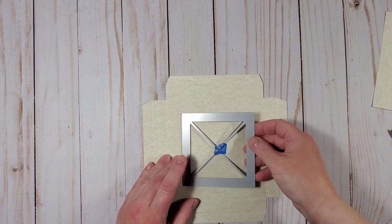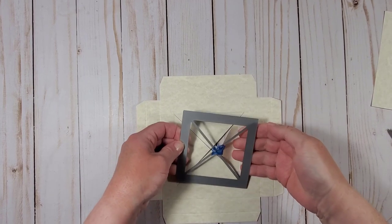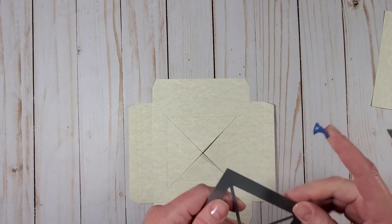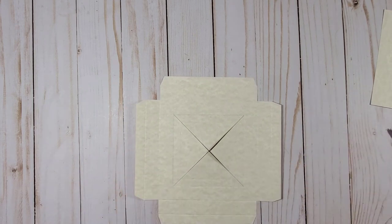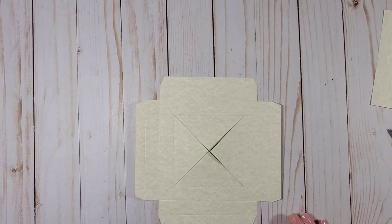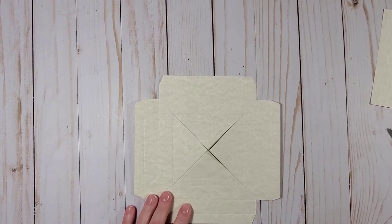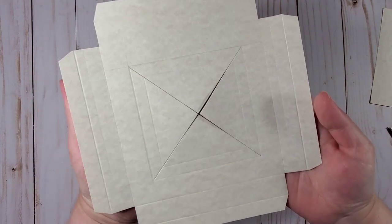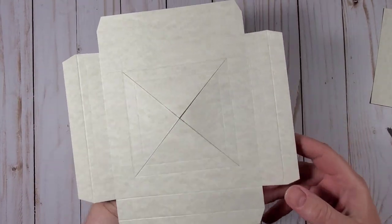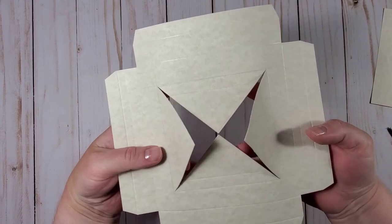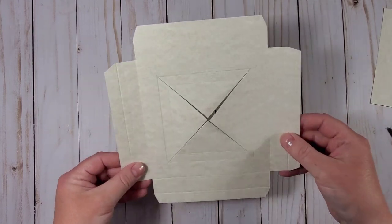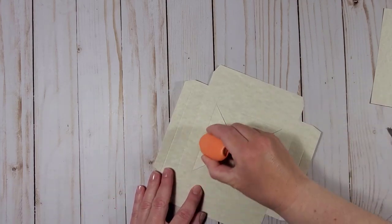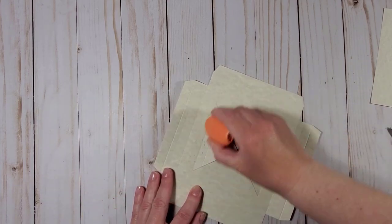Okay so I ran the whole piece through my die cutting machine and I can remove the die now to have a look at what we have here. So first of all this is what the die created for us, this opening in the center of the cardstock piece. I can now go ahead and erase the guidelines that I had before.